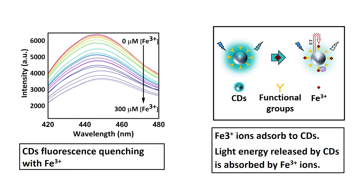Therefore, developing sensitive and cost-efficient techniques for the detection of ferric ions is important for early diagnosis and monitoring of disease. The carbon quantum dots we made are specifically sensitive to ferric ions due to their higher affinity to the functional groups on the surface of the carbon quantum dots. The ferric ions will attach to the surface of the carbon quantum dots and quench their emission intensity. This reduction in emission intensity is proportional to ferric ion concentration. Here I have exposed the carbon quantum dots to different concentrations of ferric ions in PBS buffer in a separate experiment, and you can see the emission intensity has been gradually decreased by increasing the ferric ion concentration.